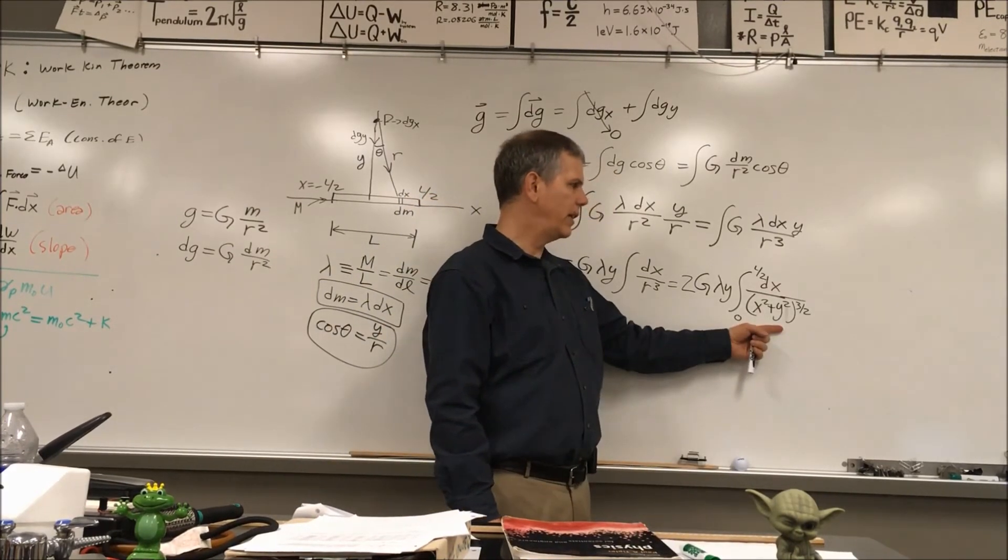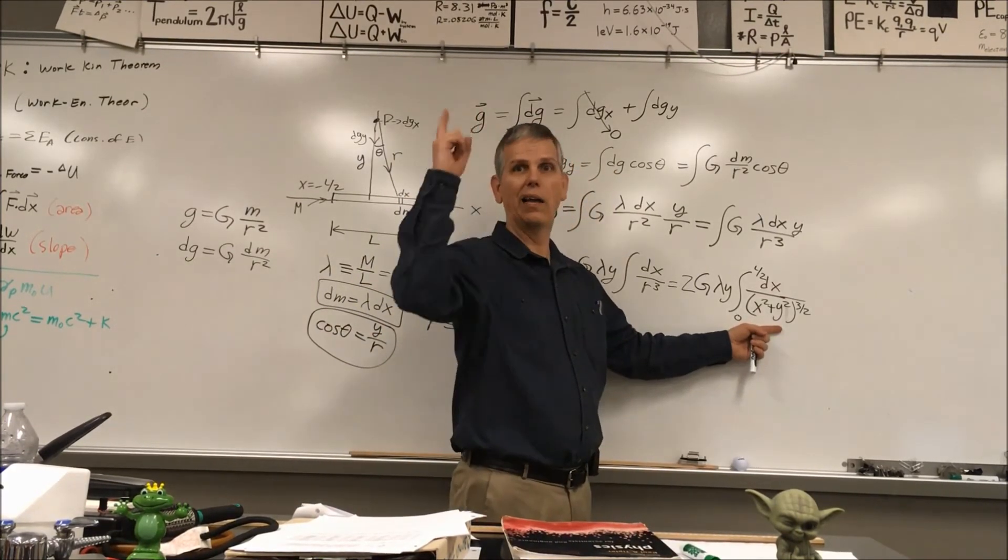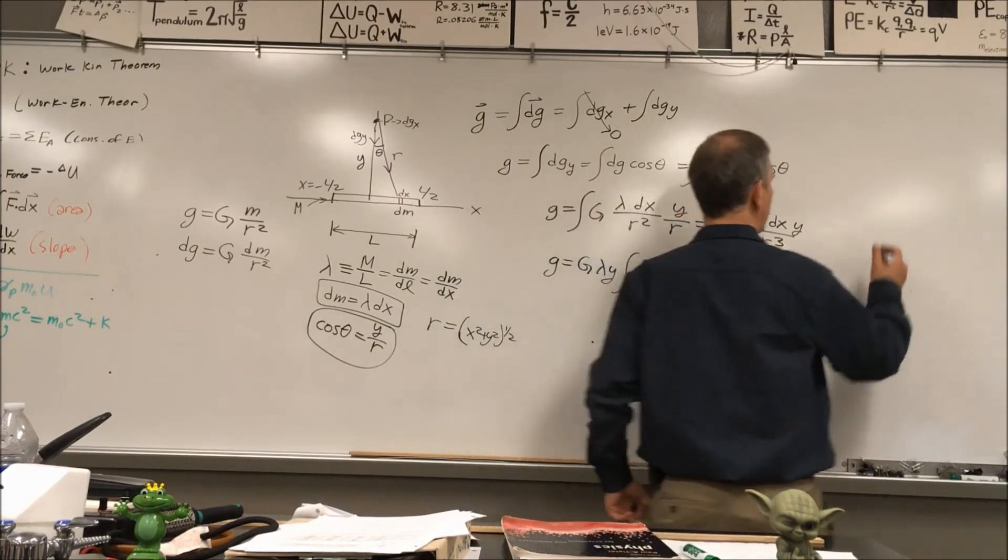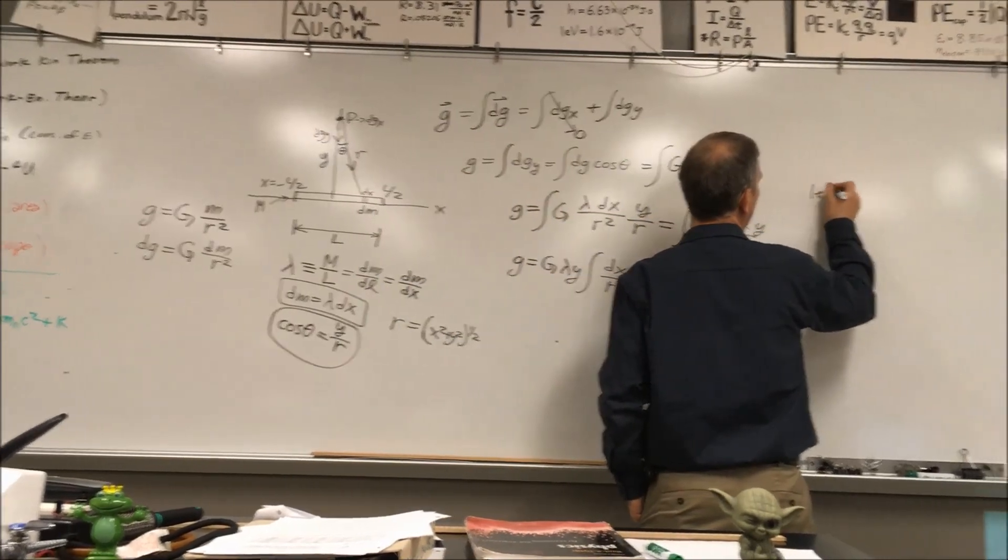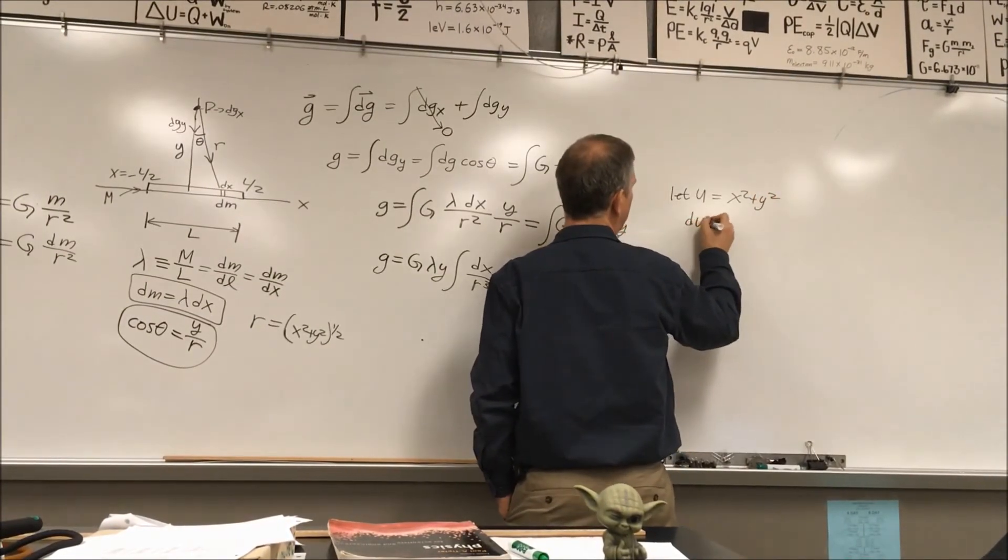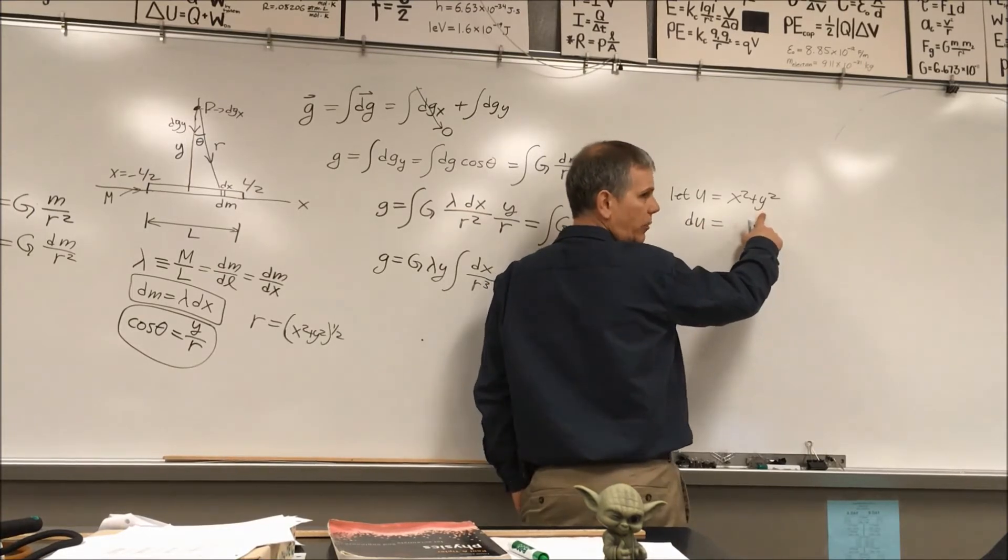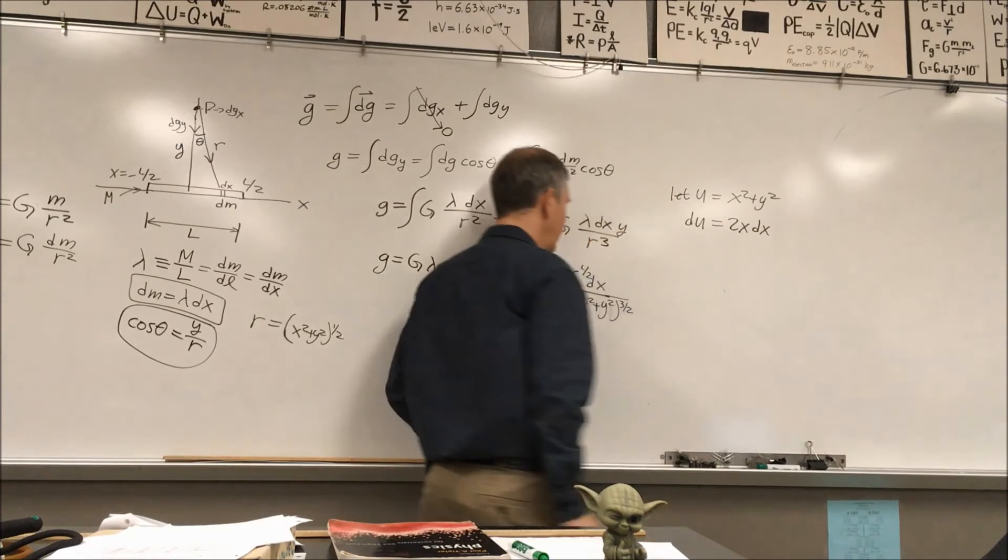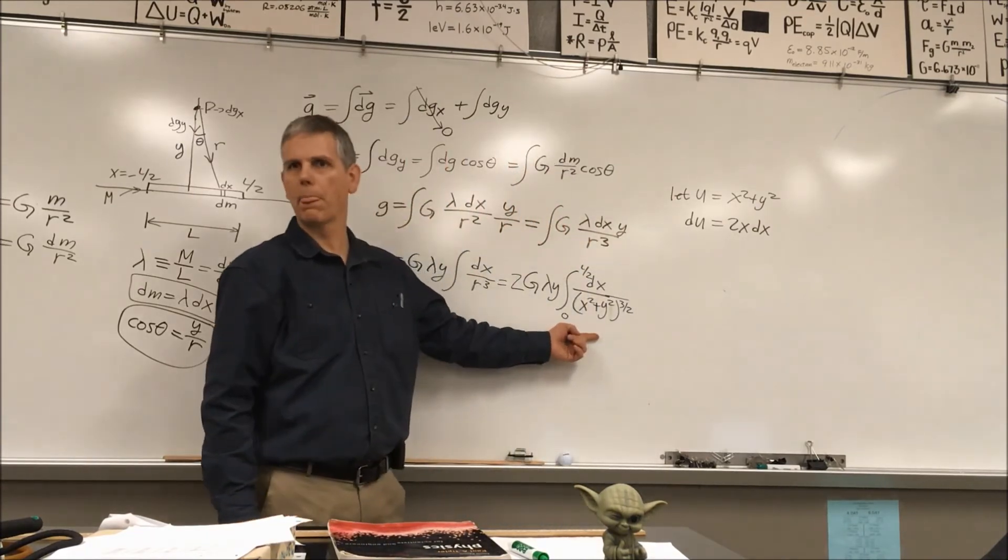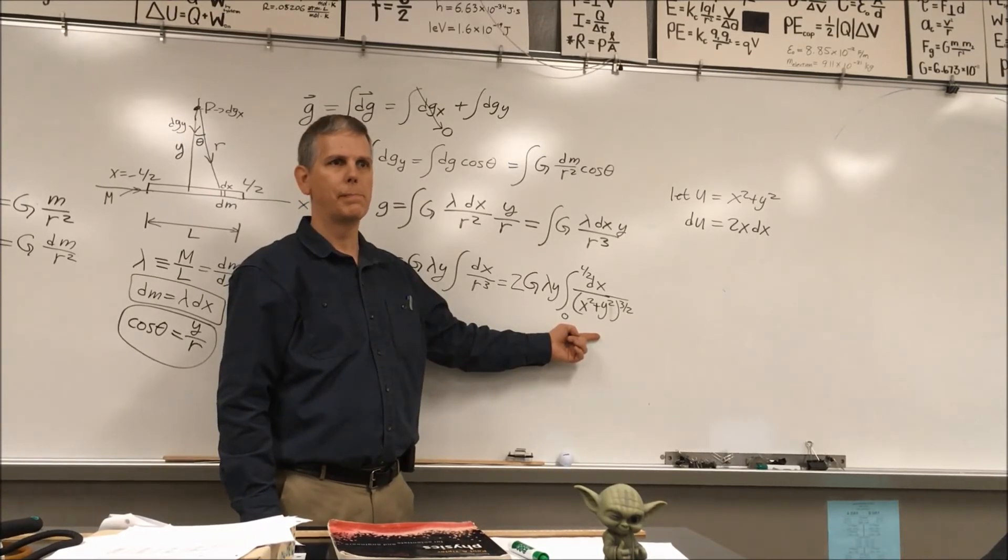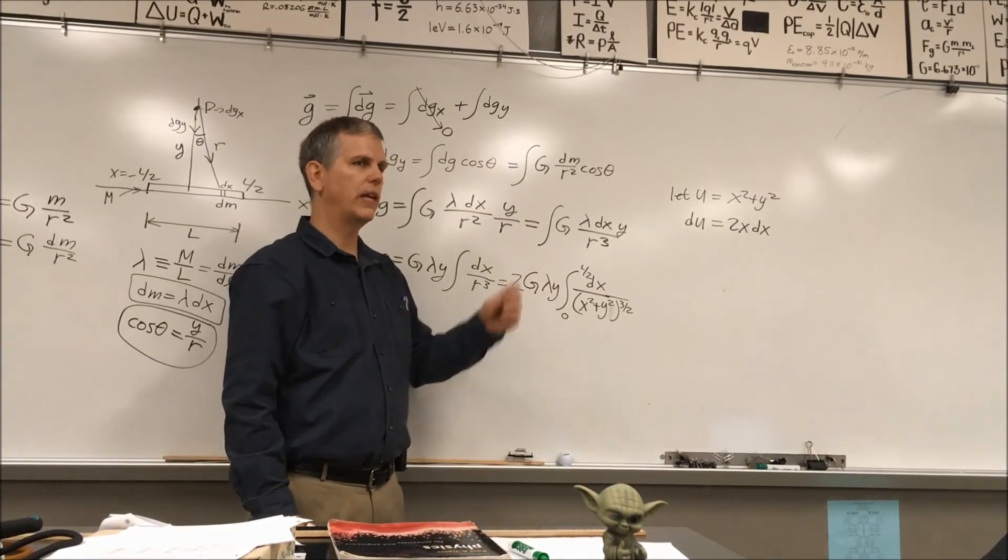Now when we look at this, you might say, aha, I'm going to use the substitution method. And you would say, because if I let u equal x squared plus y squared, then du would give me 2x dx. Do you see any 2x's in there? Are there any 2x's in there? I don't see any. It turns out that won't work.